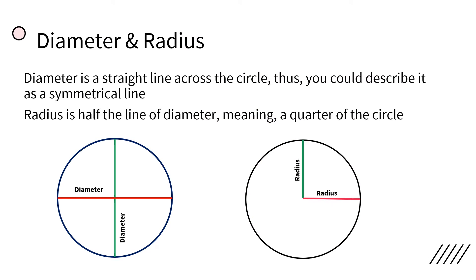Diameter and Radius. Diameter is a straight line across the circle. Thus, you could describe it as a symmetrical line.